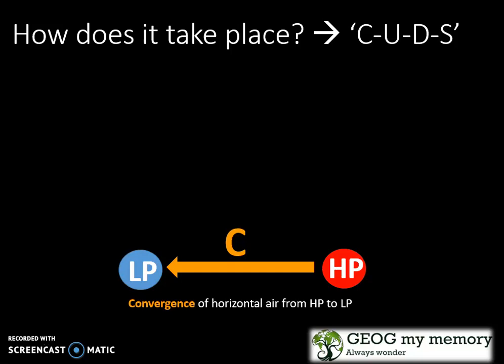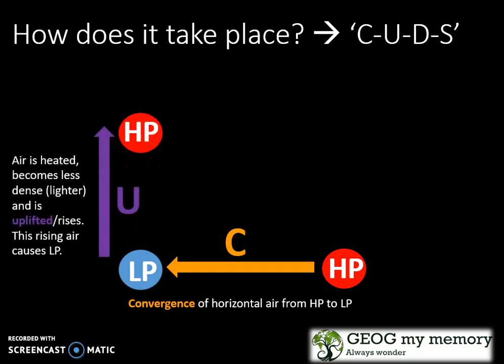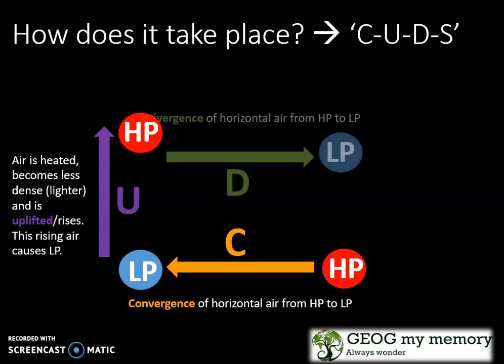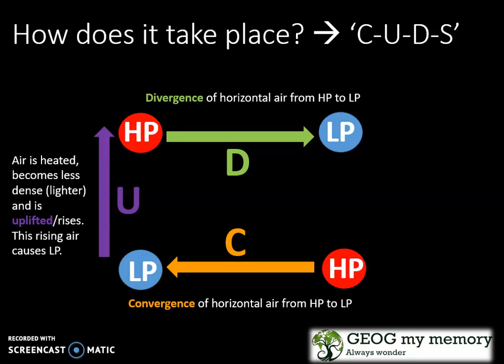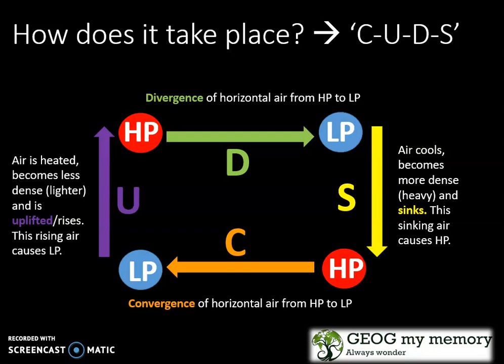Let's use the acronym CUTS. C refers to the convergence of horizontal air from high pressure regions to low pressure regions. Thereafter, U — where air is heated, becomes less dense and is uplifted; the rising air causes low pressure. Then D — there is divergence of horizontal air from your high pressure to your low pressure again. Finally, S — your air cools, becomes more dense and sinks; the sinking air causes high pressure. You can see from this diagram that your high pressure and low pressure regions are synchronized.